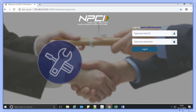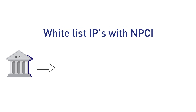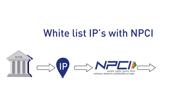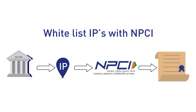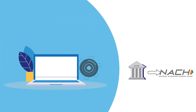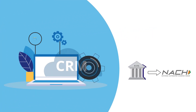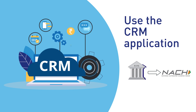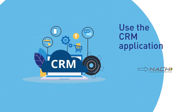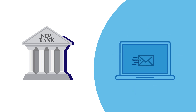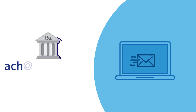How to get access to this tool? The interested bank has to whitelist their IPs with NPCI to access this certification tool. Banks which are already a member of NACH should use the CRM application for raising the request for getting access. If in case of a new bank, they have to mail the same to ACH@npci.org.in.